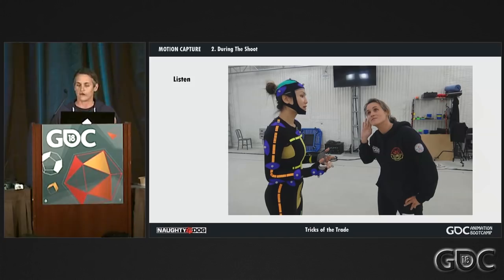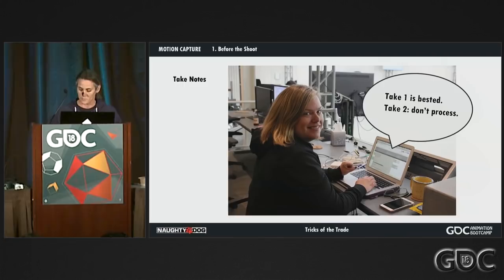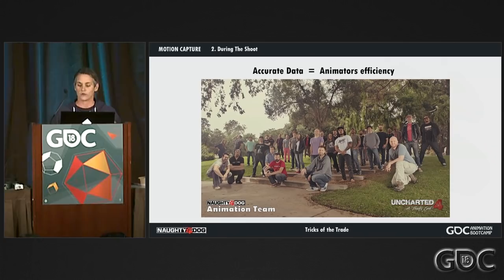Have someone who is not directing the shoot taking notes, so when the data is delivered you don't have to look through all of it to know what you liked. When capturing gameplay there are specific requirements — speed, movement trajectories, beginning and end poses. These restrictions can make performances stiff and unnatural, but they are necessary. I like to start without giving much direction and then restrict from there. Getting accurate data on stage will save a lot of animator time — you need to find the right balance between time spent at the stage and time spent adjusting animations.